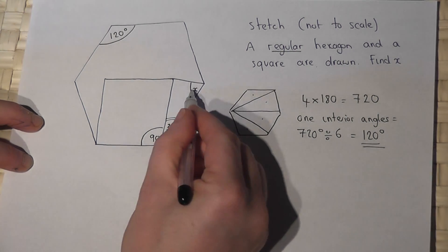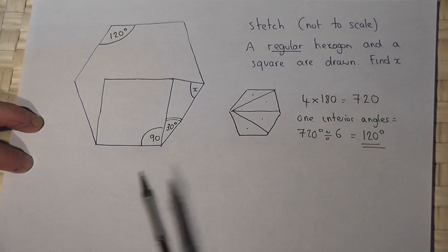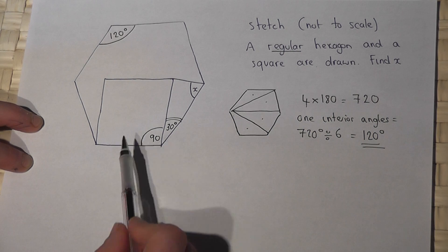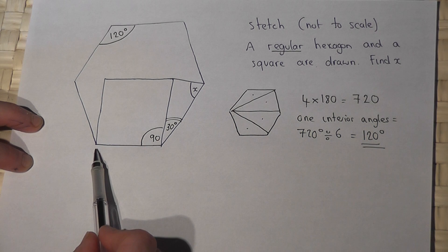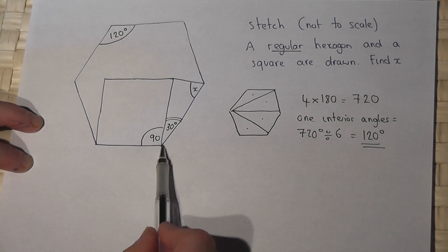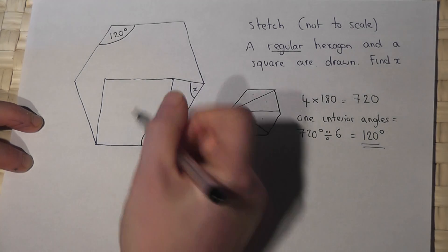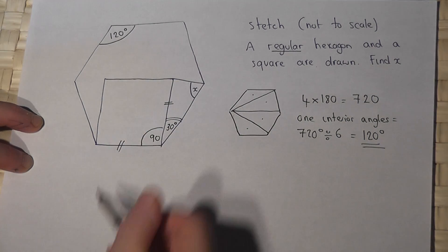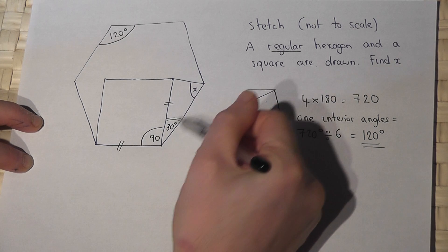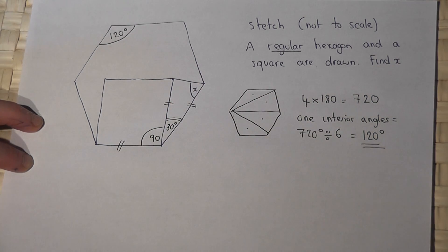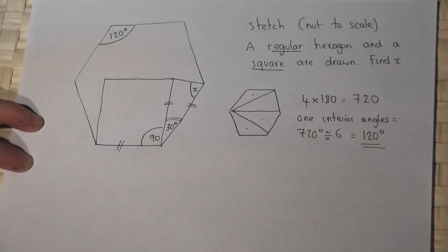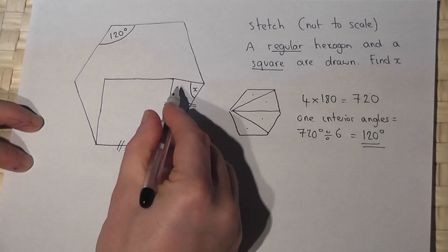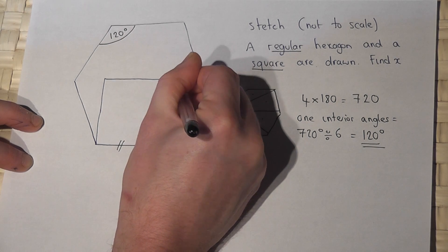However, the question says find angle x and this requires one final subtle observation. Now then, this is a square. So this side here and that side there are the same length, but also this is an isosceles triangle. So therefore these two angles must also be the same.